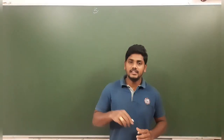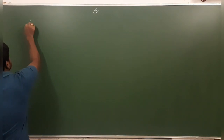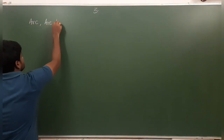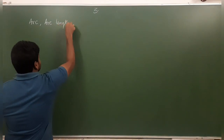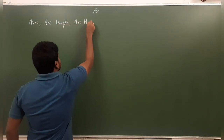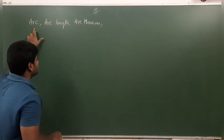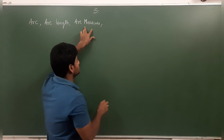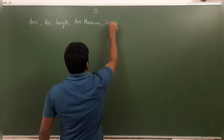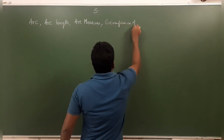In this session, we will clearly learn what is meant by an arc, arc length, arc measure, and circumference of a circle. Based on the circumference of a circle, we will learn the relationship between arc length L, arc measure, and radius of a circle.